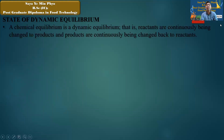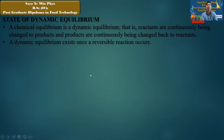Equilibrium is a dynamic equilibrium. The product is continuously being converted to reactant, and the reactant is continuously being converted to product. Dynamic equilibrium involves a reversible reaction — we have a reversible reaction and equilibrium.